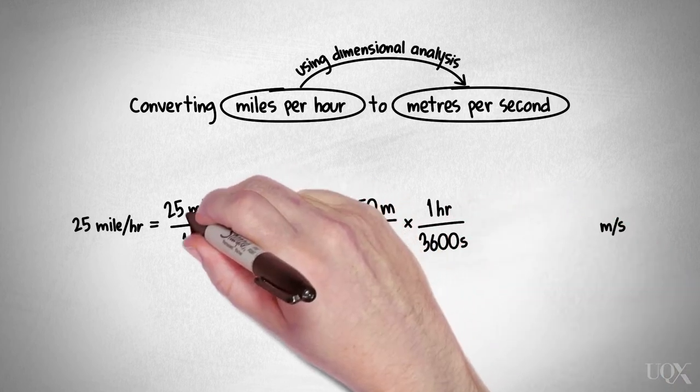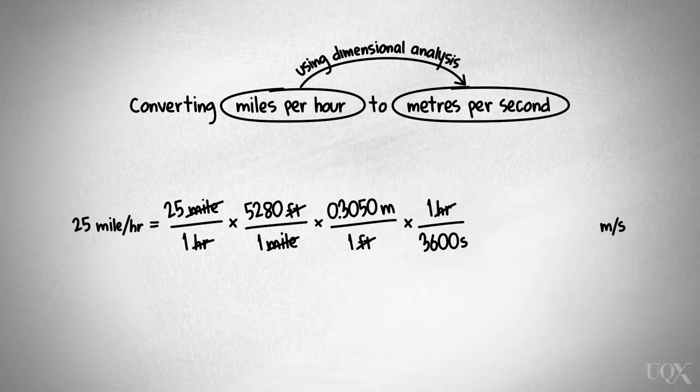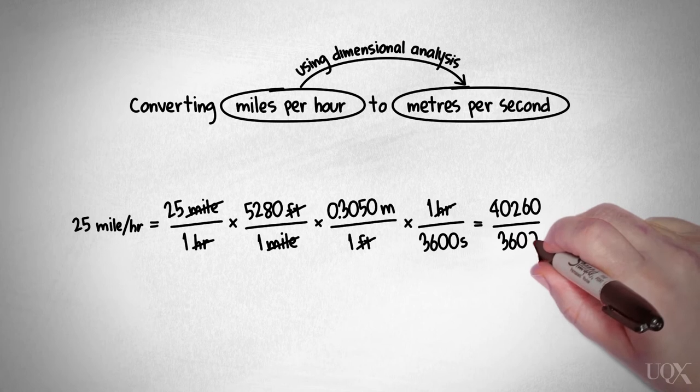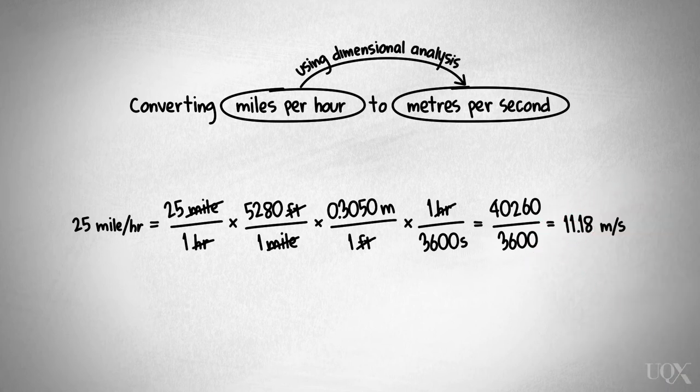Once again, we will remove like units, then multiply top values together, and then bottom values together to give us our final fraction, which gives us our conversion.